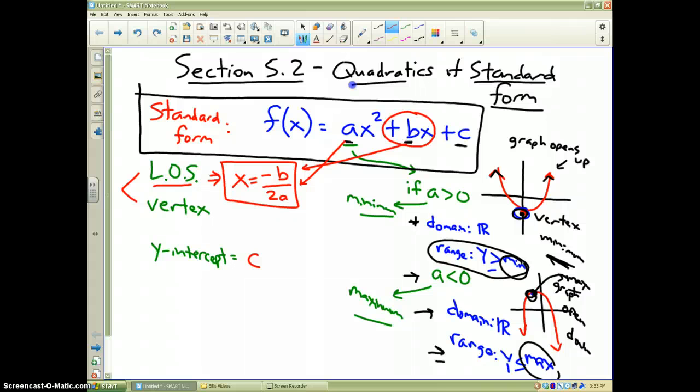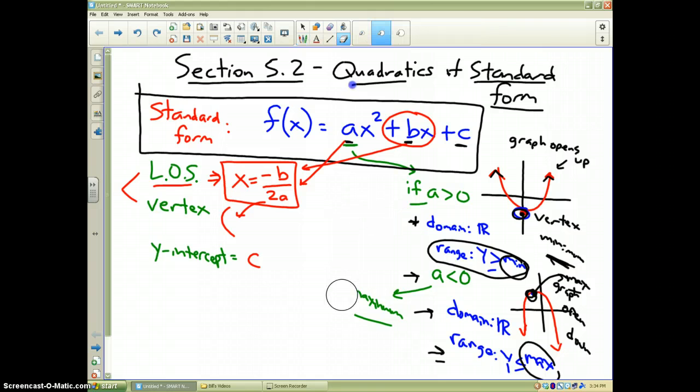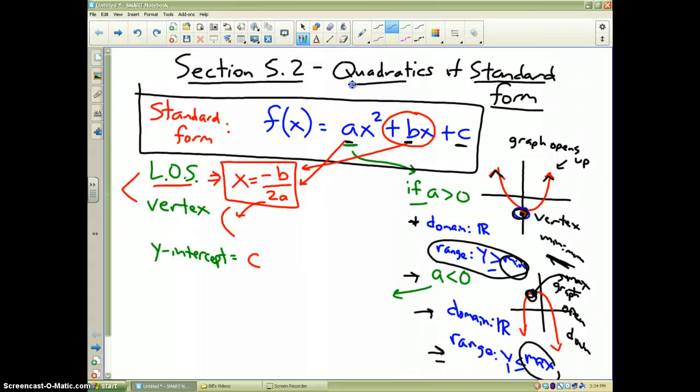The vertex. Whatever answer you get for the line of symmetry, that is also the x value of the vertex. Negative b over 2a is also the x value of the vertex.